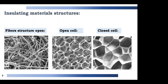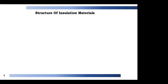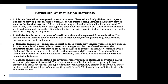Insulation material structures are bifurcated into three major parts: one is fiber structures, which are open fiber structures; second is open cell insulation; and third is closed cell insulation. Fibrous insulation is composed of small diameter fibers which finely divide the air space — examples include rock wool and mineral wool. Cellular insulation covers closed cell insulation such as nitrile rubber, XLP and EPDM. Granular insulation is composed of small nodules which may contain voids or hollow spaces — examples include calcium silicate, expanded vermiculite or perlite and cellulose. Vacuum insulation is applied for very high or low temperatures with layers of aluminum, copper or gold.